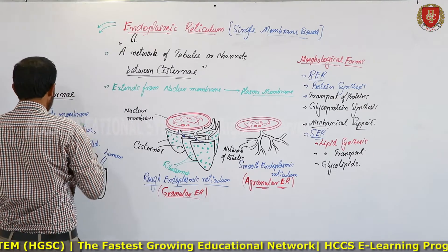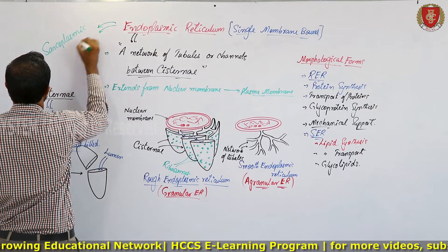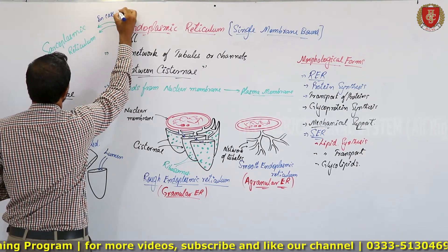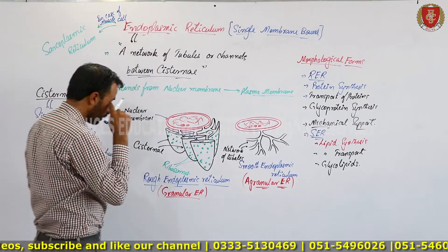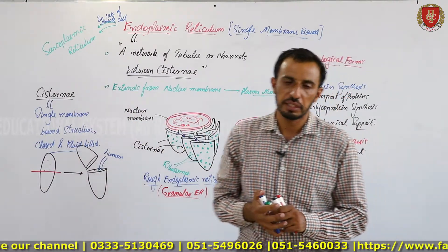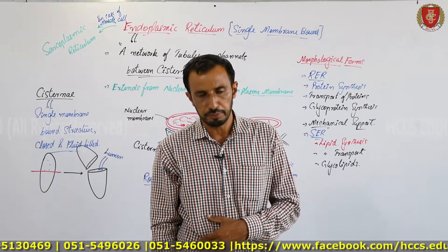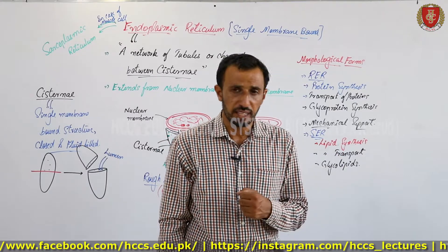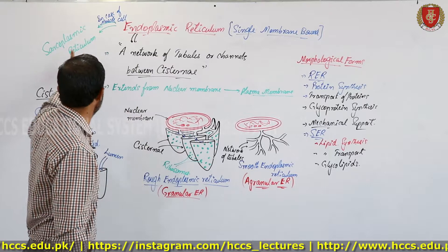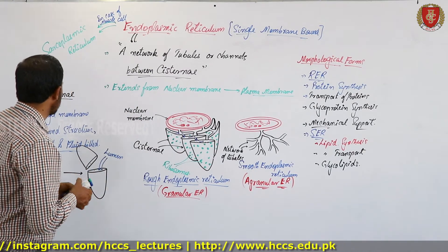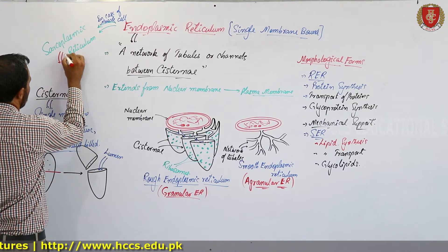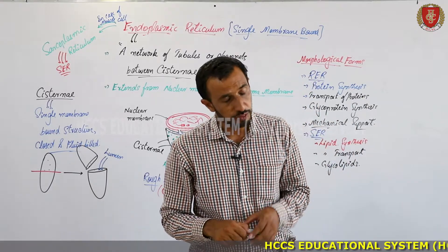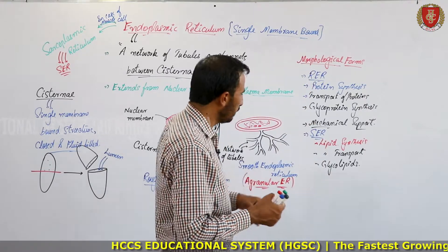In the case of muscle cells, the smooth endoplasmic reticulum is called Sarcoplasmic Reticulum. This is an important MCQ point. Just as plasma membrane is called sarcolemma and cytoplasm is called sarcoplasm in muscle cells, endoplasmic reticulum is called Sarcoplasmic Reticulum (SER). The sarcoplasmic reticulum is a form of smooth endoplasmic reticulum.